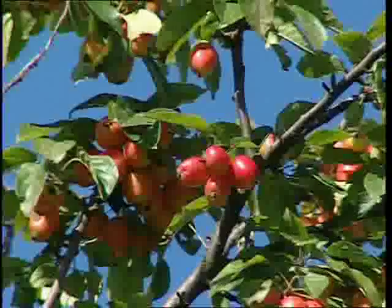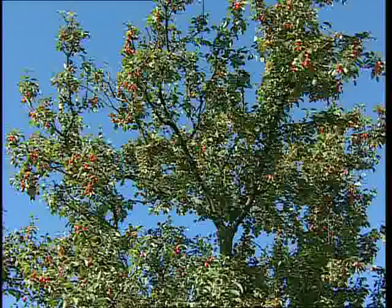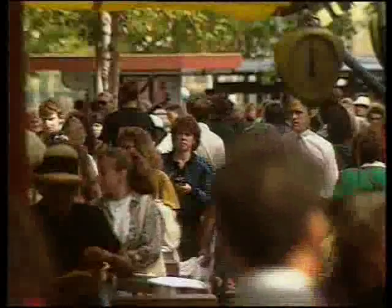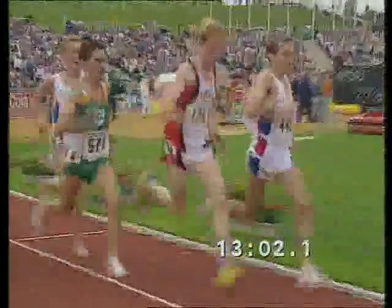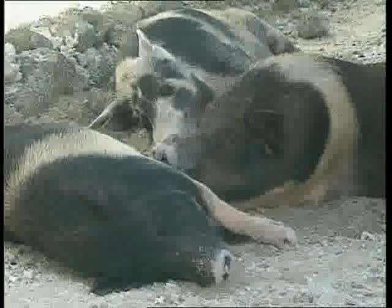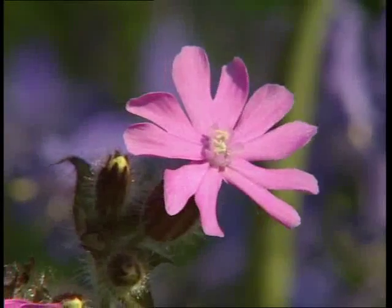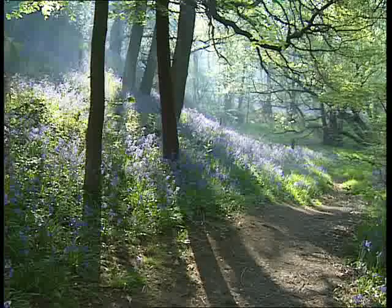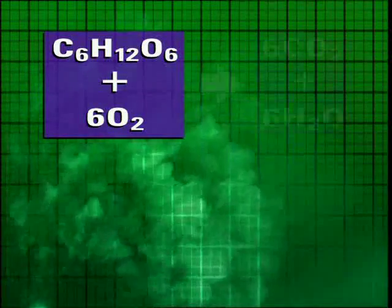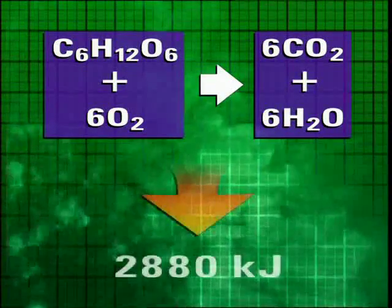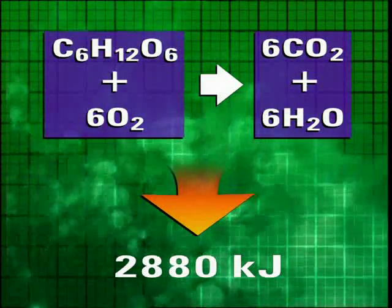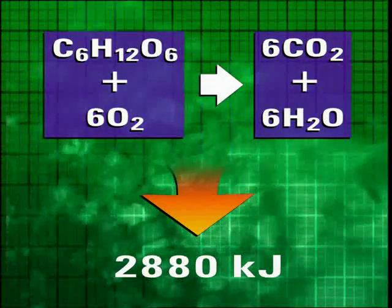All animals and plants need energy to live and grow. They get this energy through a process known as respiration, a chemical reaction which releases energy from food. All living things respire all the time, even when they're asleep. Most plants and animals respire aerobically, which means they use oxygen. This combines with glucose to form carbon dioxide and water, and at the same time, energy is released. It's this energy which allows plants and animals to move and grow.